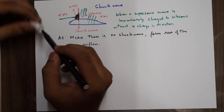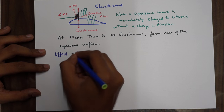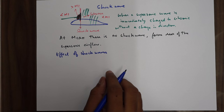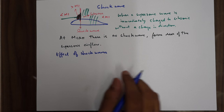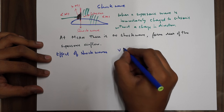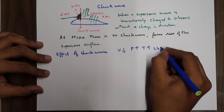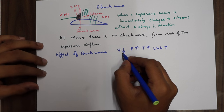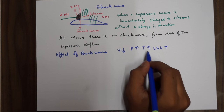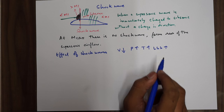A good way to remember the effect of shock waves: the velocity decreases, while pressure, temperature, and local speed of sound all increase. So across a shock wave over the aerofoil — velocity decreases, and pressure, temperature, and LSS increase.